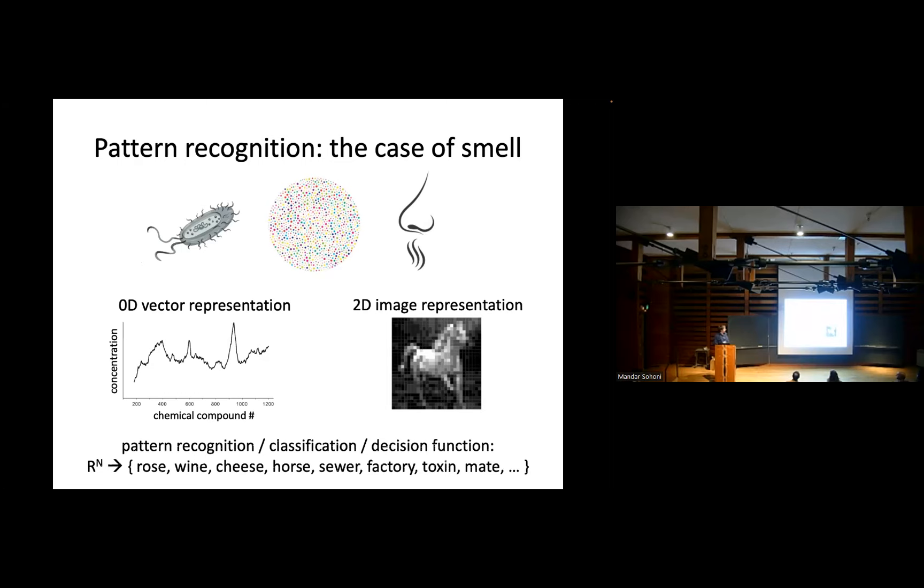So smell, or pattern recognition or classification of smells, is some kind of decision function that takes, if we have n different species, takes n real numbers and then decides what kind of smell is this. Are we smelling a rose or wine or a specific variety of cheese or a horse or various other things that might be relevant to us? So this is the kind of pattern recognition that we're going to be challenging, taking as a challenge to ask, how can a molecular system do it?